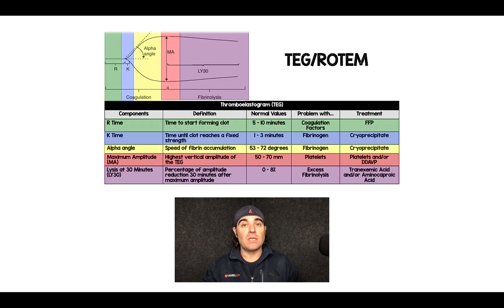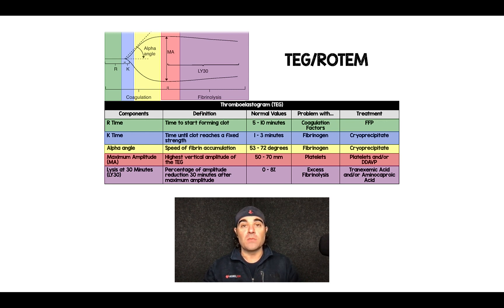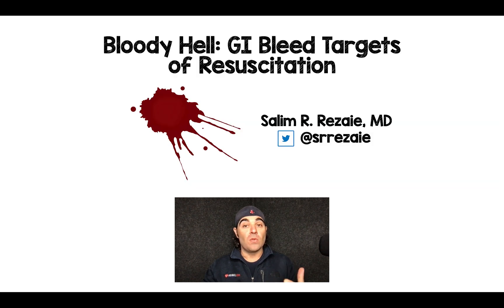Some people are lucky enough to have TEG and ROTEM at their shop. I put together an infographic listing all the different components of TEG and ROTEM, what the abnormalities are, what the problem is, and what you need to transfuse. Unfortunately at my shop we don't have TEG and ROTEM, but for those of you that do, hopefully you find this useful. There you have it — GI bleed targets of resuscitation. Please let me know your thoughts, comments, and questions, and thanks for tuning in.